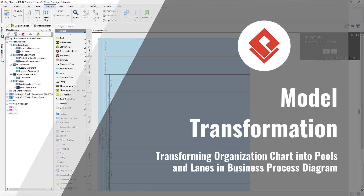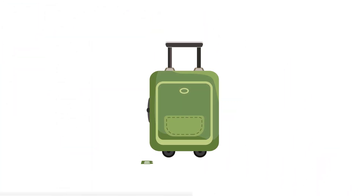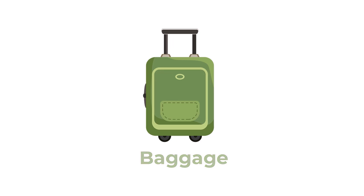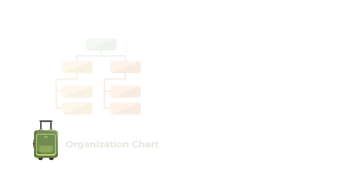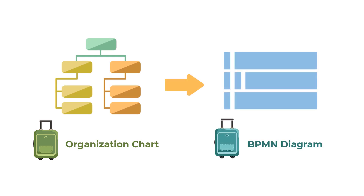Visual Paradigm Professional Edition or above allows users to define reusable custom model transformation rules. We call it a baggage. In this video we will show you how to make use of this to transform an organization chart into pools and lanes in a business process diagram.